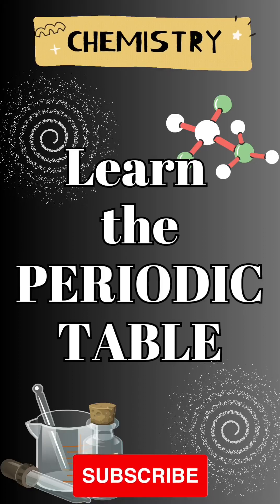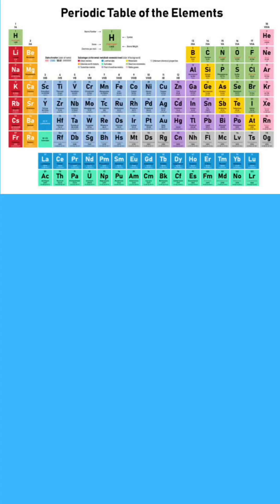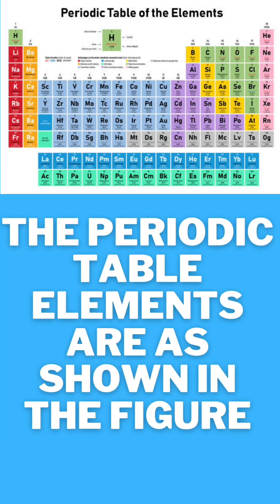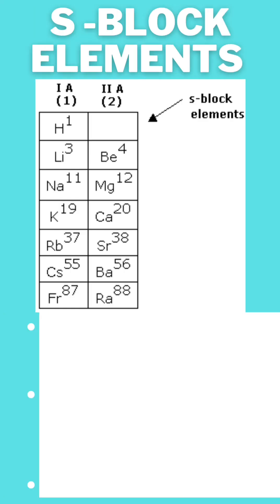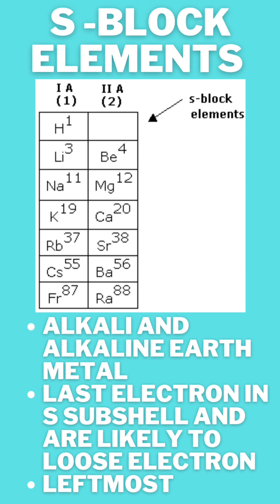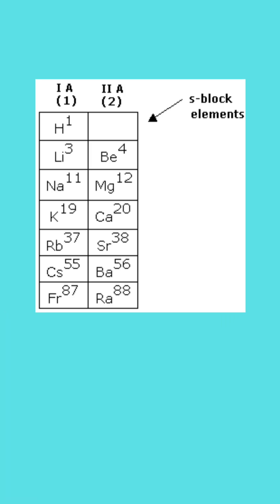Let's learn about the periodic table. The first set of elements are the s-block elements. They are present on the leftmost side of the periodic table. They are mainly alkali and alkaline earth metals. Their last electron goes into the s sub-shell and they are likely to lose electrons.